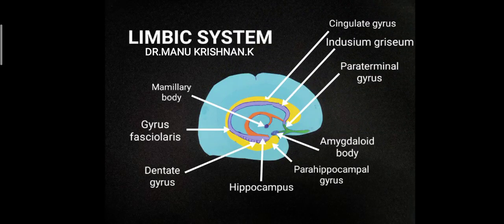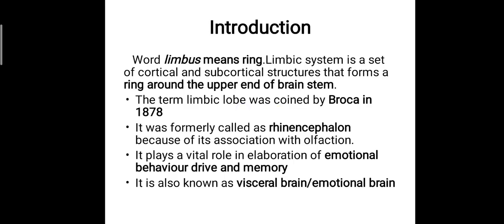Hi everyone, this is Dr. Manu Krishnanki, and today we will be discussing the anatomy of the limbic system. The word limbus means ring, and the limbic system is a set of cortical and subcortical structures that forms a ring around the upper end of the brainstem. The term limbic lobe was coined by Broca in the year 1878.